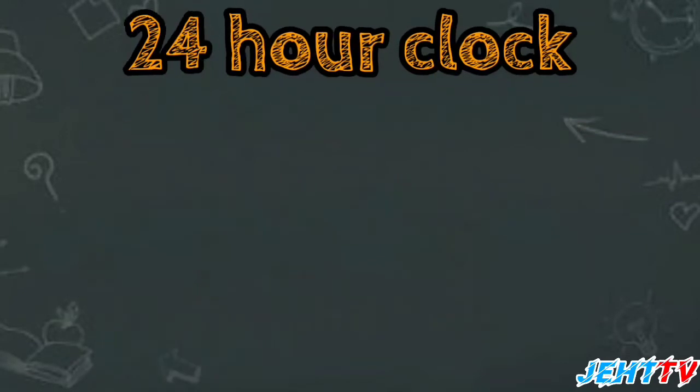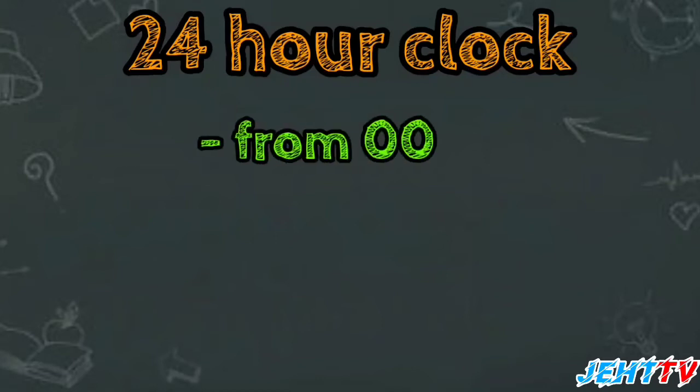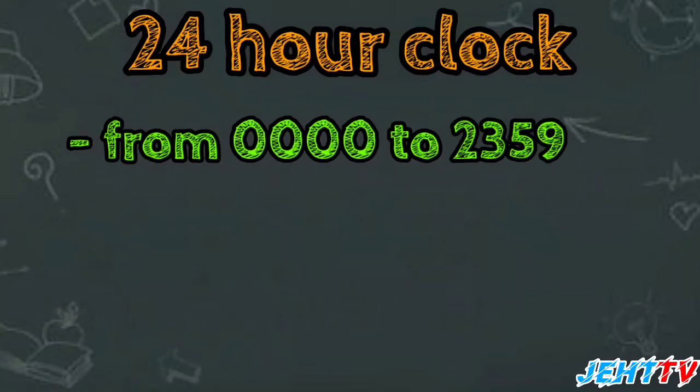And for the 24-hour clock system, we only use numbers from 0000 until 2359. We do not need to use AM and PM in the 24-hour clock system. We just use the number.